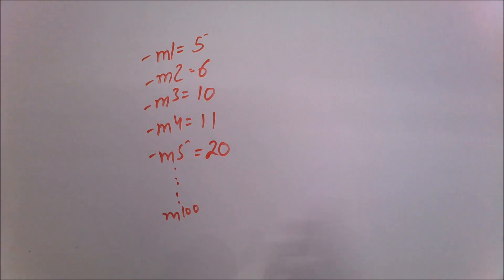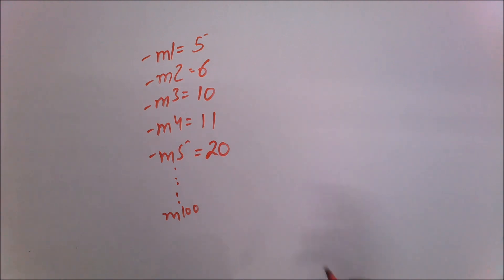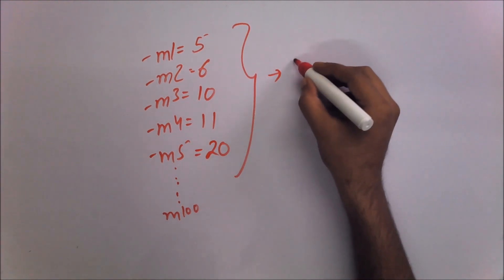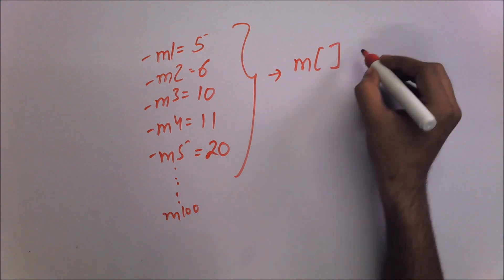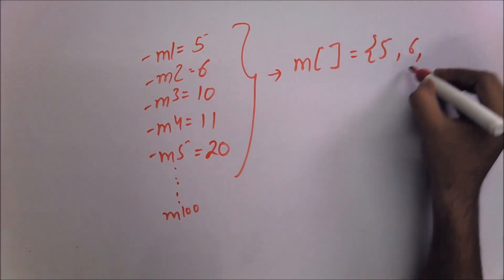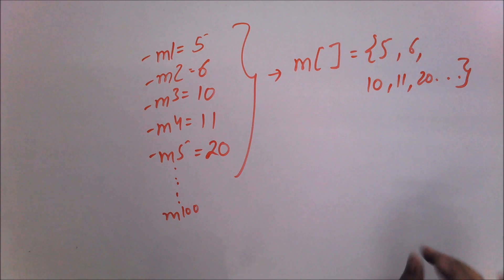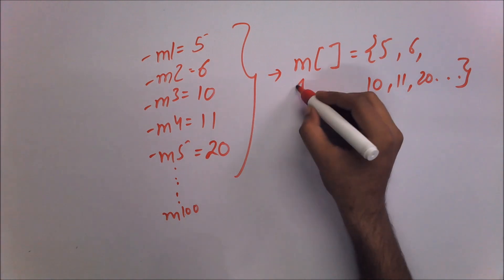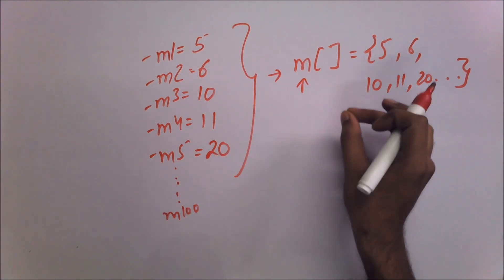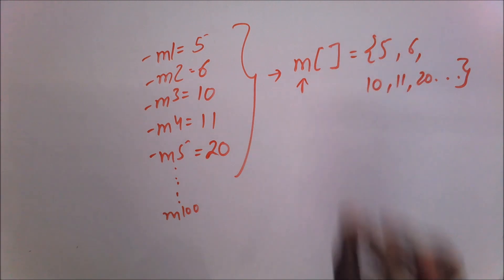So won't it be a benefit if we take all those marks under a single variable? We can take all these marks under a single variable like: array m = {5, 6, 10, 11, 20} and so on. Using an array, we can save all those similar types of values under a single variable known as an array.